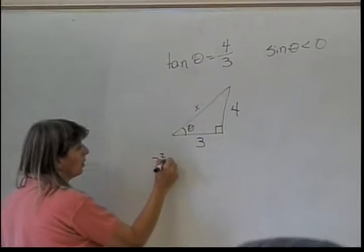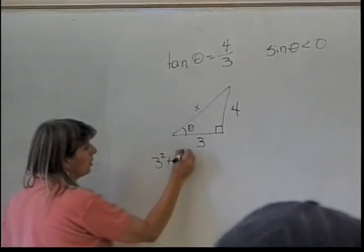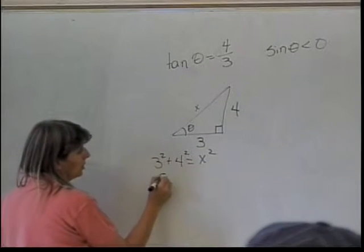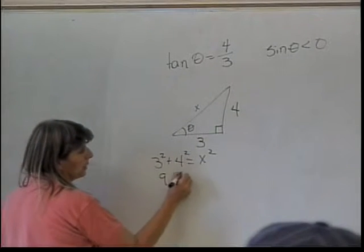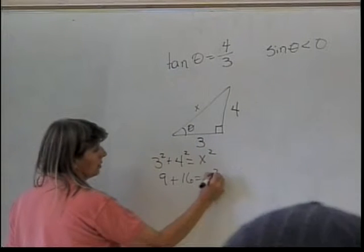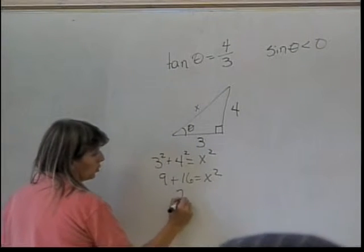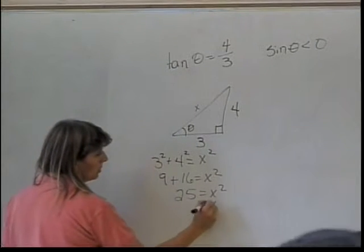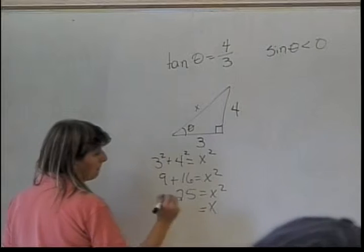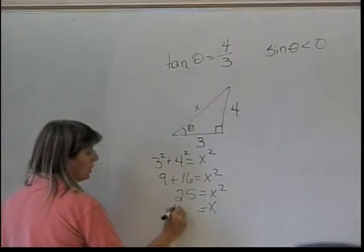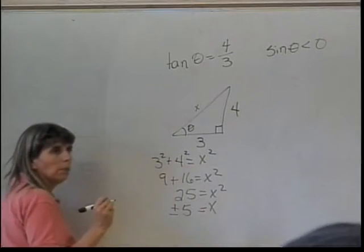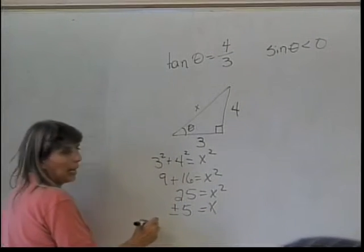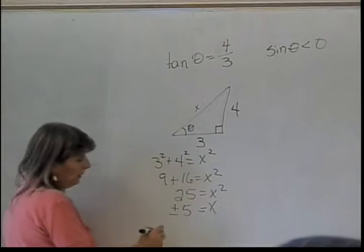Three squared plus four squared equals x squared. So that's nine plus sixteen equals x squared. Twenty-five equals x squared. So x equals plus or minus five. Which one do I keep? The positive one — length is positive.